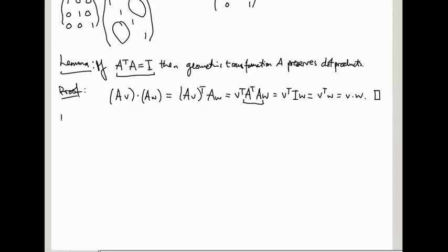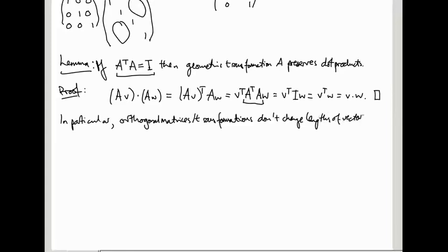In particular, orthogonal transformations, the transformations corresponding to orthogonal matrices, don't change lengths of vectors. That's because the length of V is the square root of V1 squared plus plus VN squared by Pythagoras, and that's the same as the square root of V dot V. And so an orthogonal matrix preserves dot products, therefore it preserves lengths of vectors.